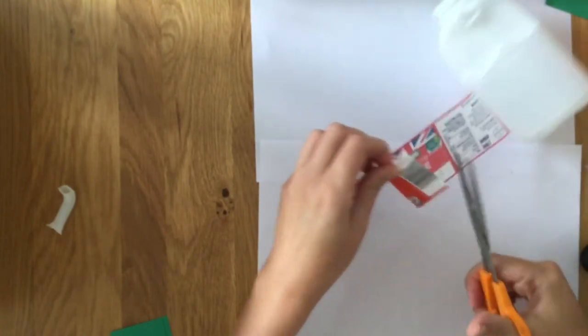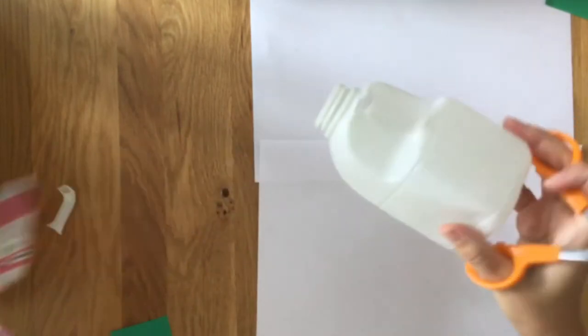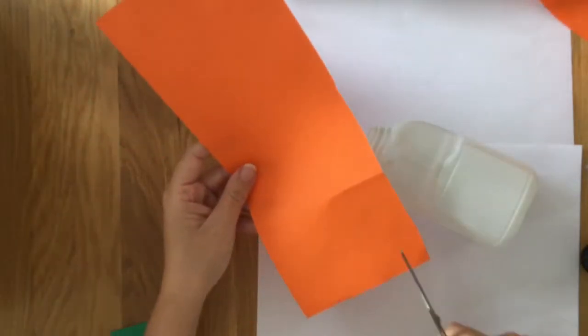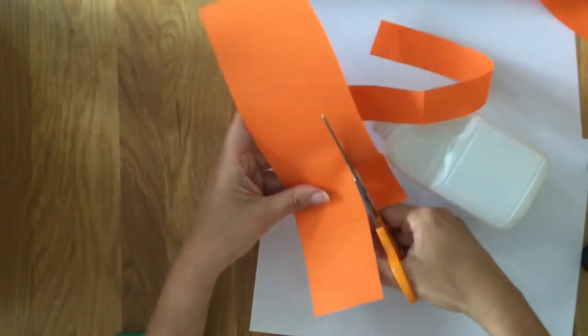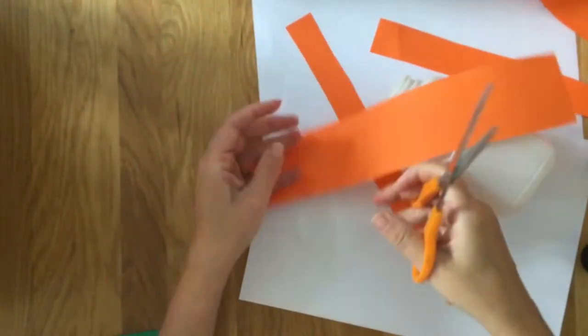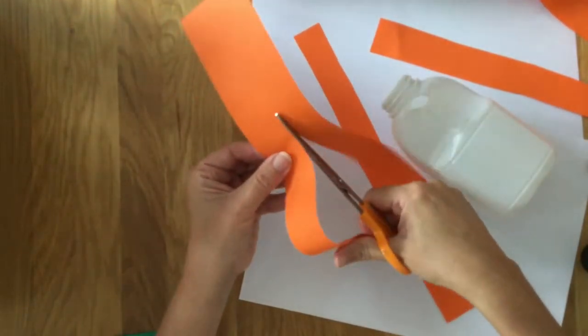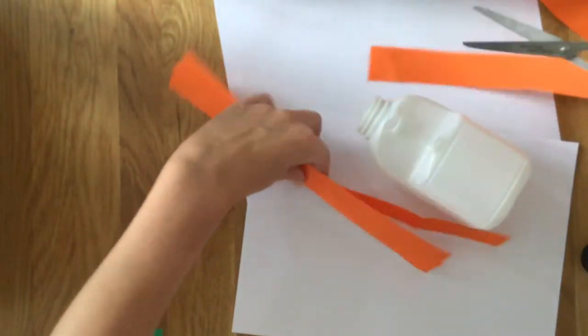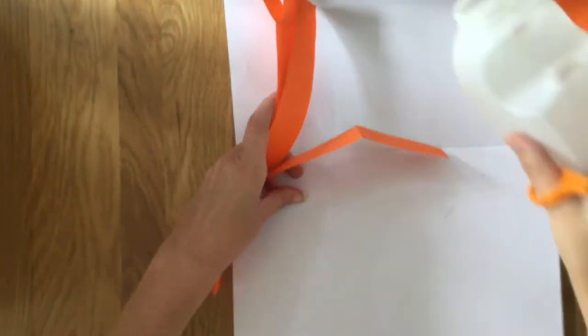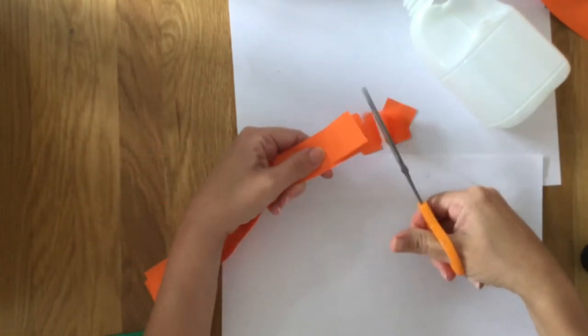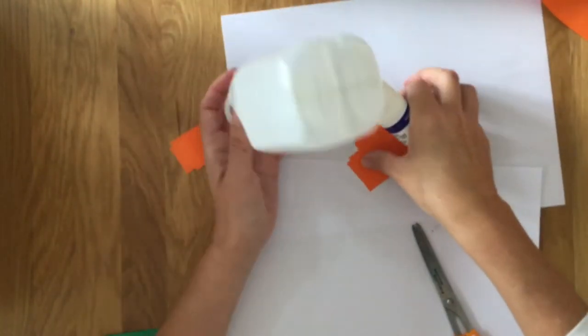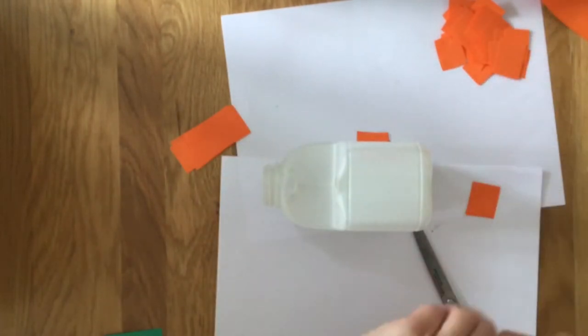And now it's all ready to decorate, so we need to cut up some orange squares of paper. Once we've got all of our squares cut out, then we're ready to start gluing the squares onto the container.